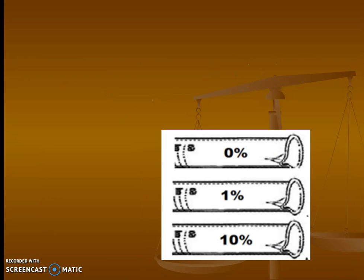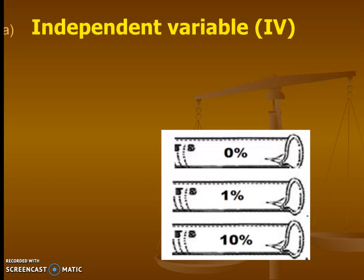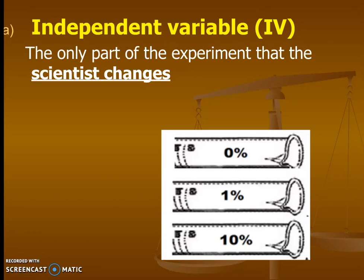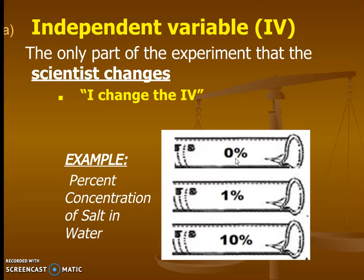So the first part of an experiment or a variable that we need to know is the independent variable. We're going to call this the IV because it's easier to say. This is the part that a scientist changes. It's actually the only part the scientist changes. You don't want to change too many parts. I try to remember this with the saying I change the IV. Maybe since that's a thing in yellow it's important and it could be written down as a memory tool. Very important. So the only thing the scientist changes is this. An example that we're going to be doing in class is putting in our seed germination experiment when we're trying to see how seeds will grow.